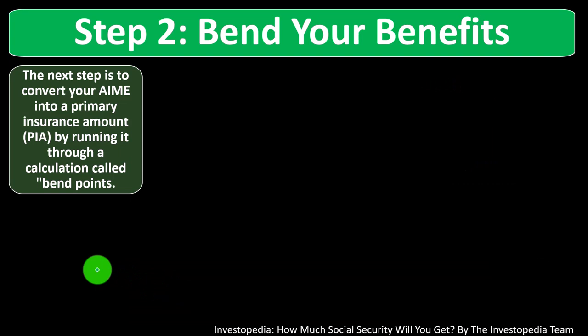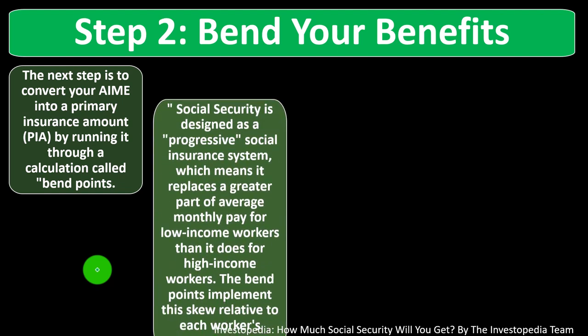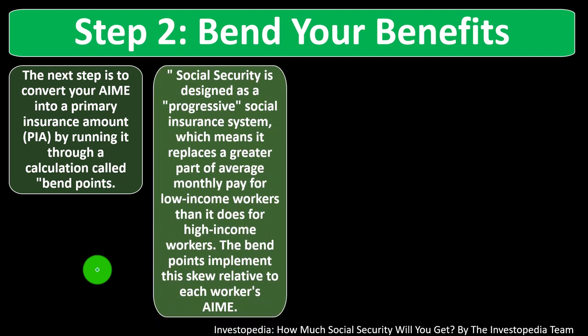Step two: bend your benefits. The next step is to convert your AIME into a primary insurance amount — the PIA — by running it through a calculation called bend points. Social security is designed as a progressive social insurance system, which means it's going to benefit people more on the lower income side of things. It replaces a greater portion of average monthly pay for low-income workers than it does for high-income workers. The bend points implement this skew relative to each worker's AIME.